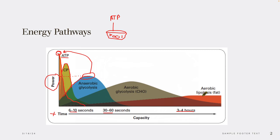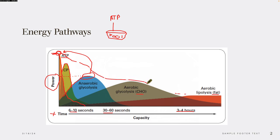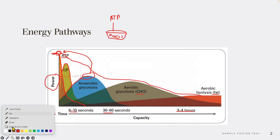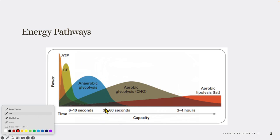All of these energy systems utilize different types of substrates — carbohydrates and fats. As time goes on, intensity decreases because this axis is power. When we first start exercise, we have very high intensity, and then it drops, and drops, and drops further as we go out in time. This just familiarizes you with what we'll focus on over the next few slides.